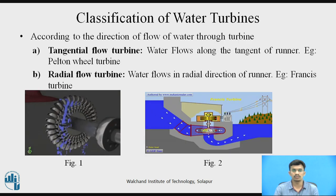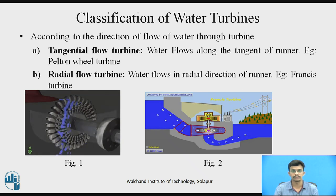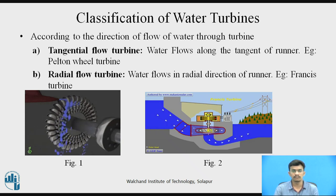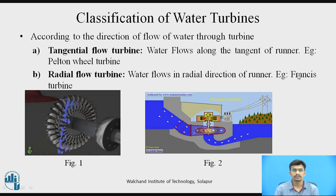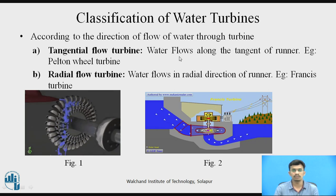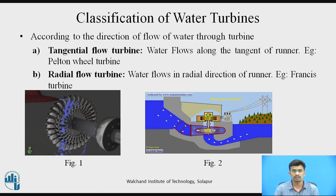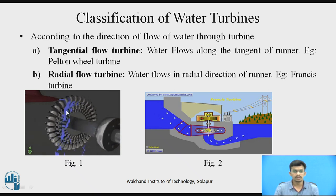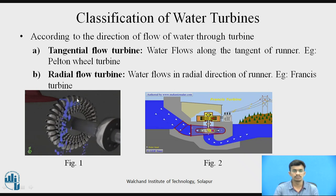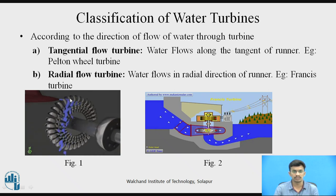According to the direction of flow of water through the turbine, we classify turbines into four subtypes: tangential flow turbine, radial flow turbine, axial flow turbine, and mixed flow turbine. In the tangential flow turbine, water flows along the tangent of the runner. The example is the Pelton turbine. As shown in figure one, with the help of a nozzle, a water jet is applied to the runner, with the direction of water along the tangent to the runner.